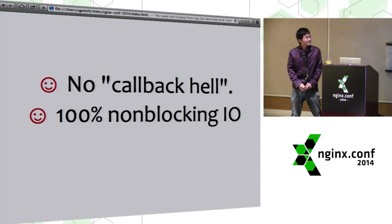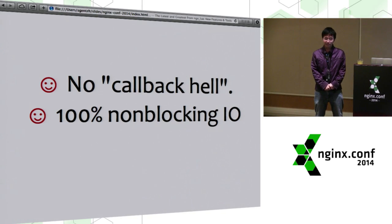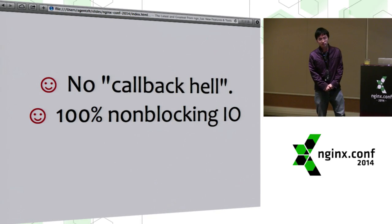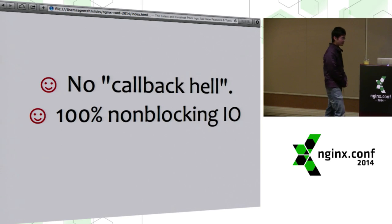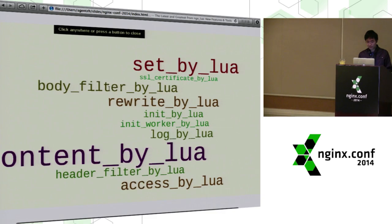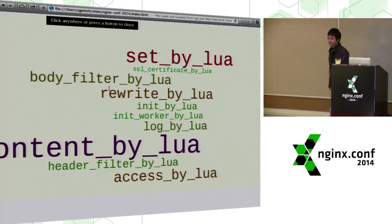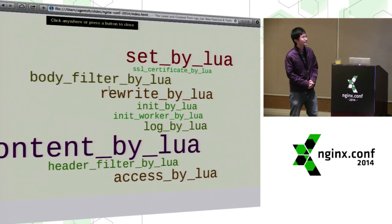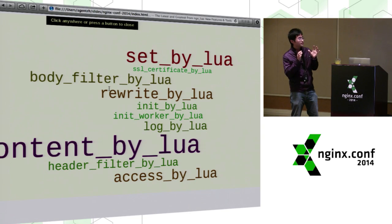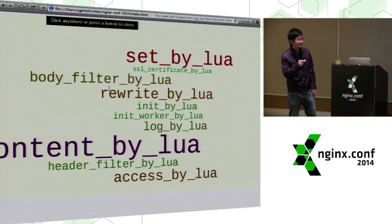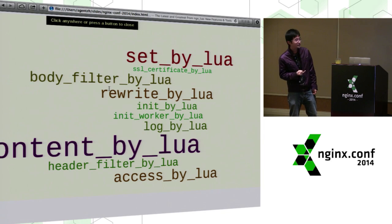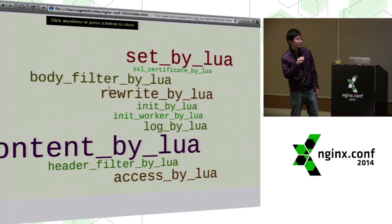We learned a lesson from Node.js — no callback hell — but we still want to enjoy 100% non-blocking I/O. That's the whole point of this project. We created a lot of hooks, NGX configuration directives, to allow the user to inject Lua code into various different processing phases in the NGX core, like the rewrite phase, the content phase, the access phase, the header filter phase, the body filter, and the init_worker, where the Lua code is invoked upon worker initialization.